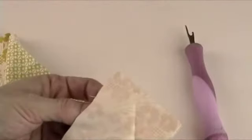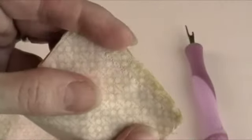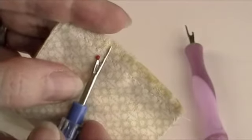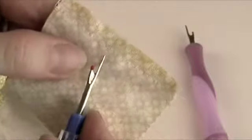Now there are two different ways to do stitch removal using a seam ripper. There's the correct way and there's the fast way. The correct way is to slip the seam ripper underneath the stitch there and then cut the stitch.